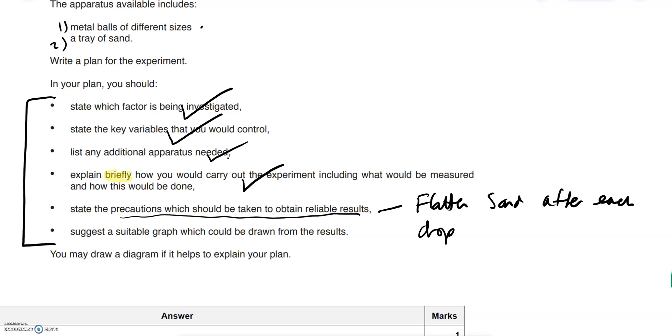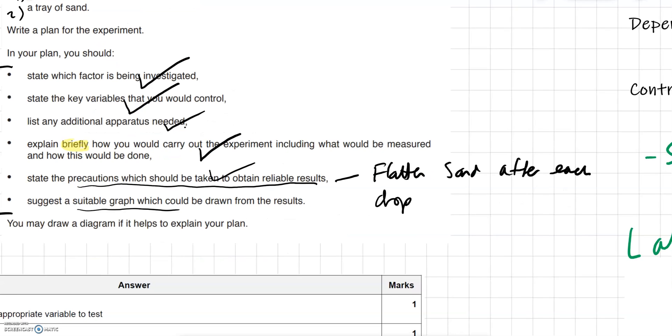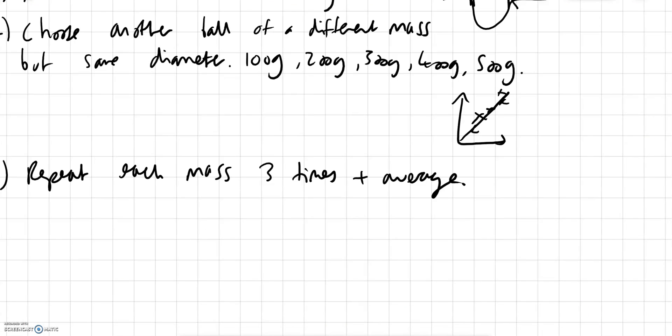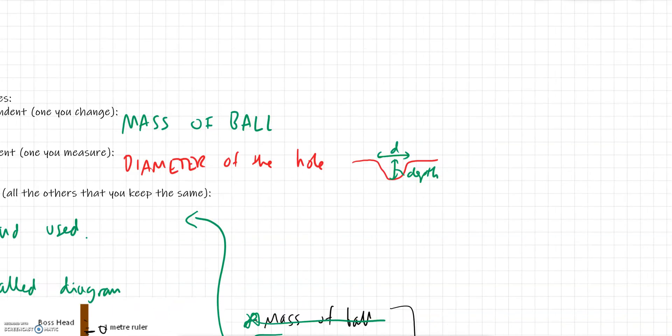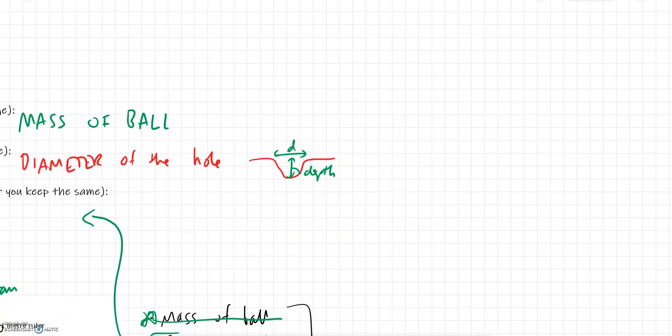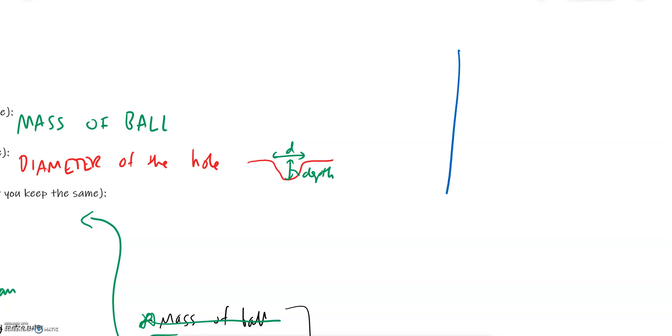The last thing we look at is a suitable graph you would use to draw conclusions from our results. Now the best thing to always do when you're thinking about what graph you're going to draw is go back to your variables. The mass of the ball is what we're going to change, and the diameter of ball is what we're going to measure. This makes it easy. The one that you change, the independent, is going to go here. So in this case it's mass of ball and that was in grams, what could be in kilograms.